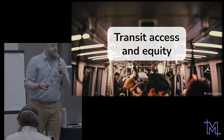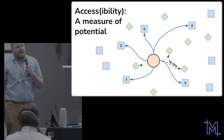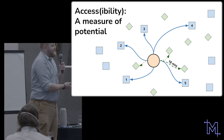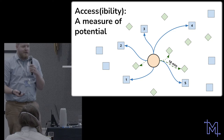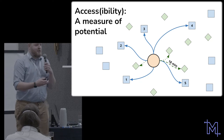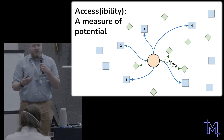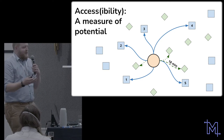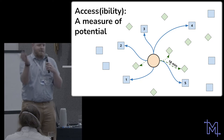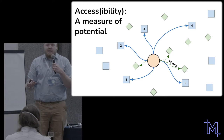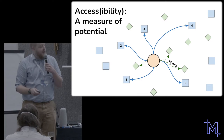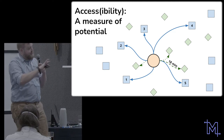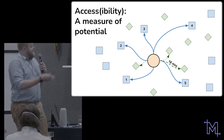I'm going to talk about transit access and specifically equity. Access is a performance measure of a transit system — it measures the potential you have to do things and reach destinations. There are two broad flavors: cumulative measures, where you count destinations reachable in, say, 30 or 50 minutes; and the dual measure — travel time to the closest facility. Sometimes one approach is more appropriate than the other.